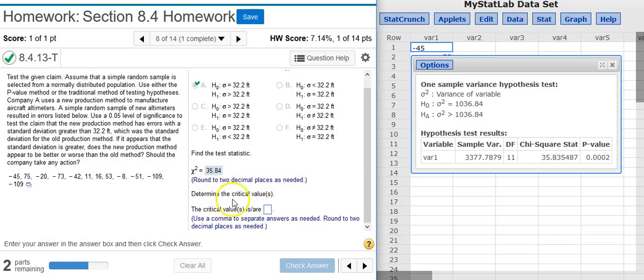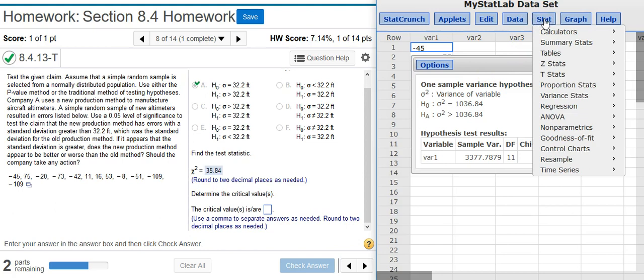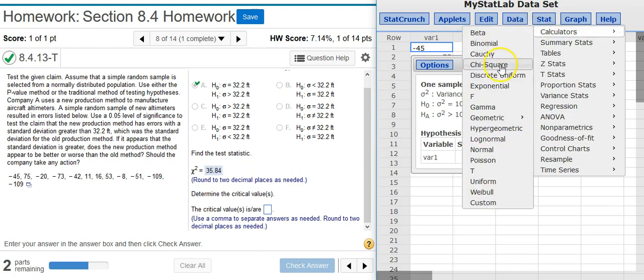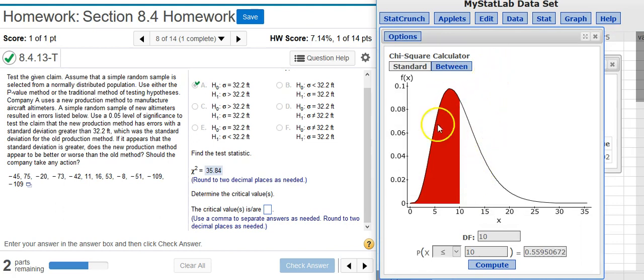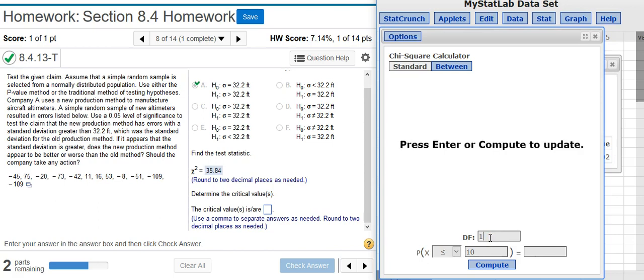The next part of our problem asks us to find the critical values. To do that I'm going to pull up the chi-squared calculator, so I go to Stat, Calculator, Chi-Square. I'm using the chi-squared calculator because this is the distribution for hypothesis testing on standard deviations. My degrees of freedom is one less than my sample size. I have 12 values in my sample data set, so this is going to be 11.